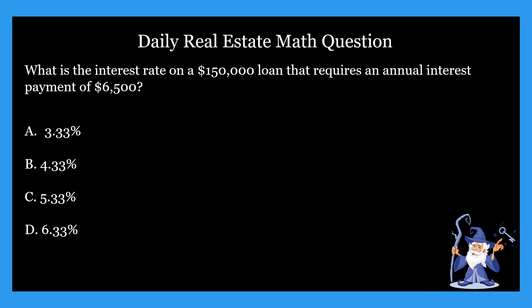We are covering interest rate problems this week. So let's take a look at our current question. The question says: what is the interest rate on a $150,000 loan that requires an annual interest payment of $6,500? It gives us four options: 3.33%, 4.33%, 5.33%, and 6.33%. I'm going to give you guys an opportunity to pause here, bust out the math, come up with an answer, and then we're going to jump into the explanation and answer soon after.